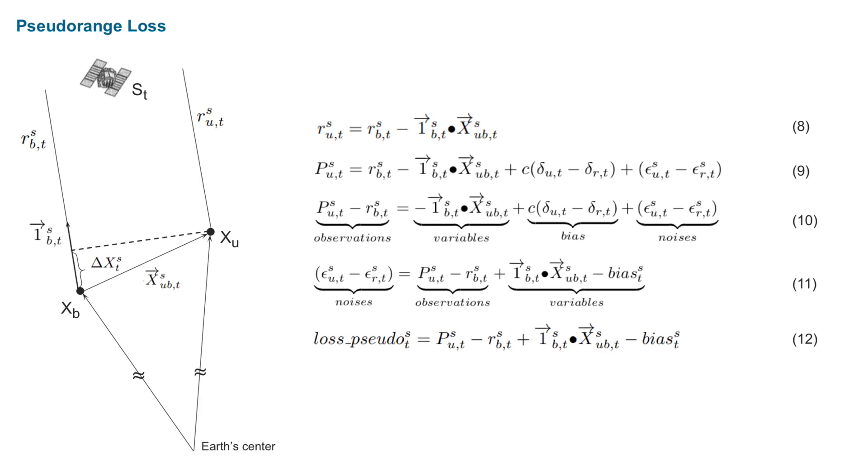Now I will introduce how the pseudo-range loss is designed. The xB in this slide is the baseline result of a point on a track. The xU is the estimation of this point. We can find that there is a geometry constraint between these two points. This is the formula 8. It is a triangular relationship.